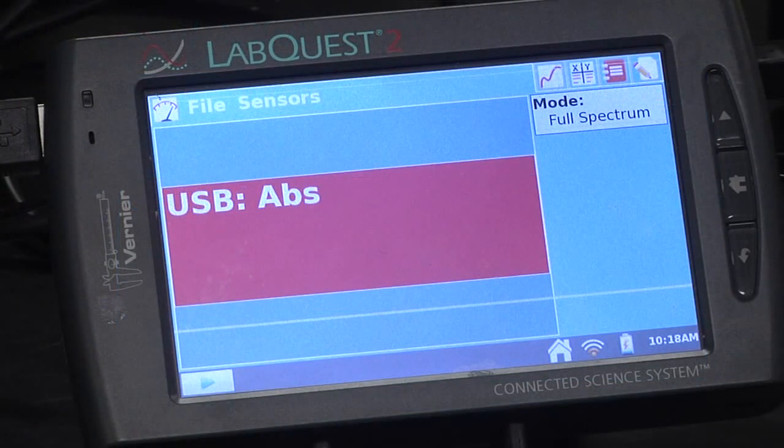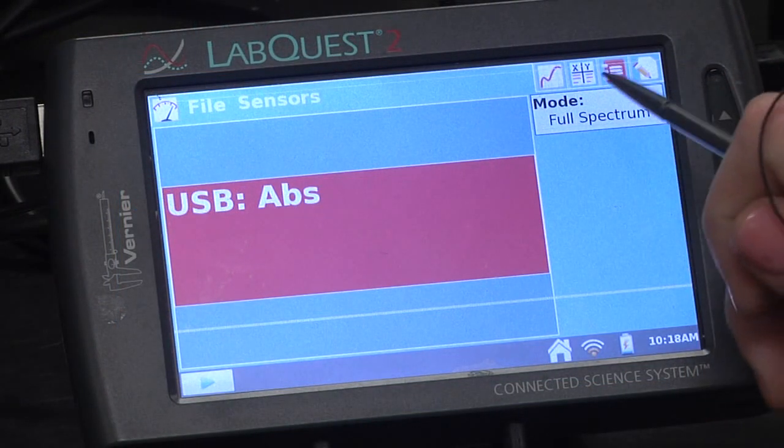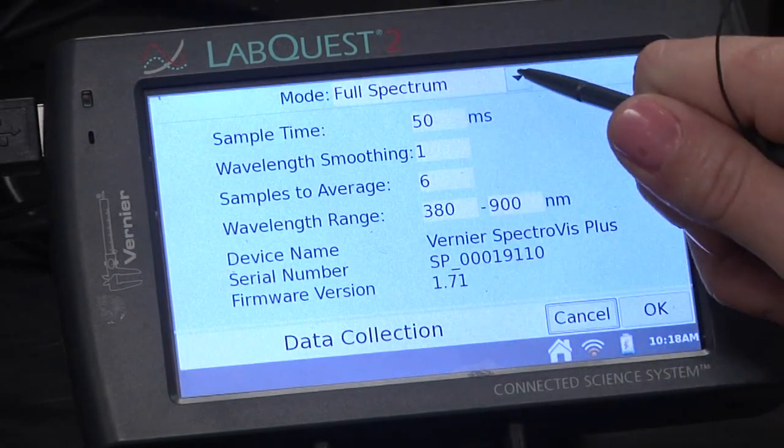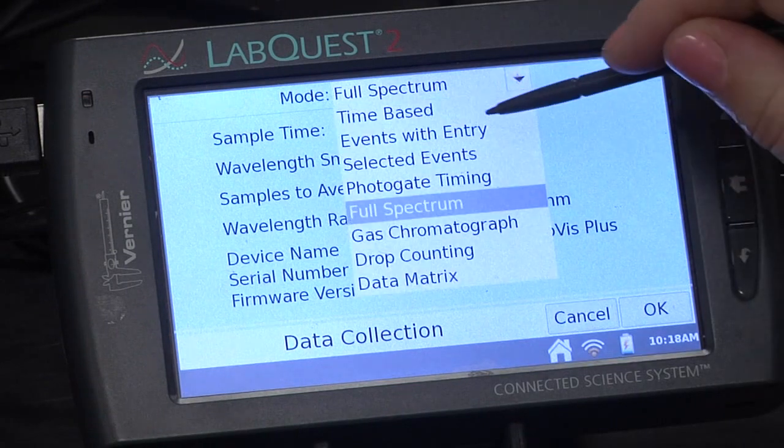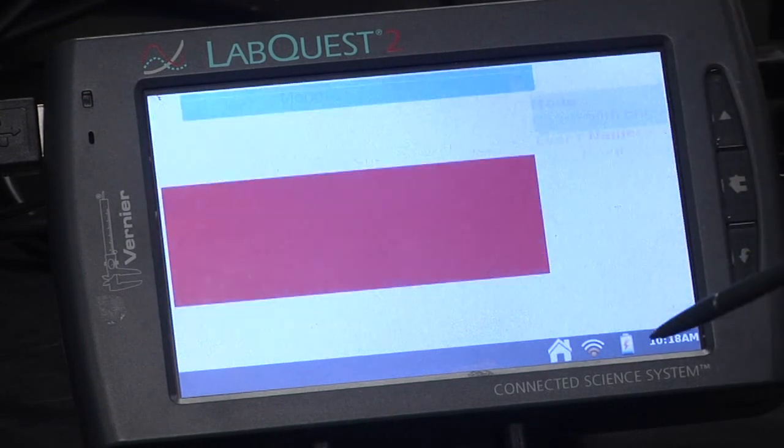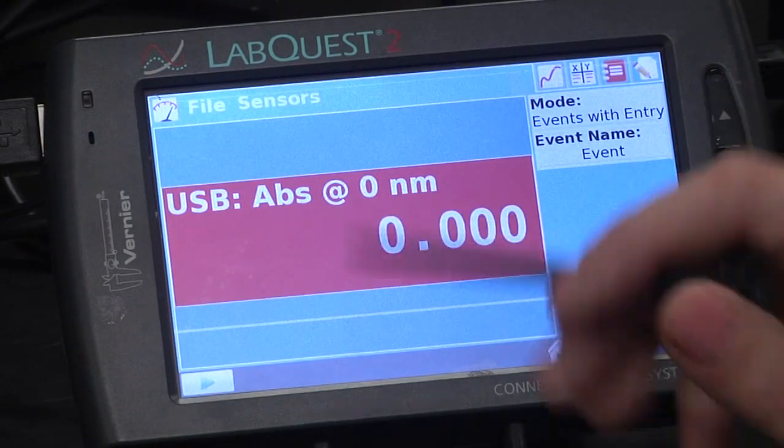The first thing you want to do before collecting any data is to change the mode. So this box right here, just tap it and change from full spectrum to events with entry.